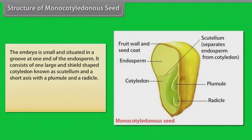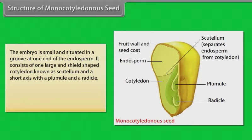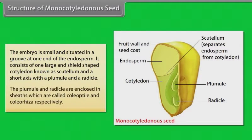The embryo is small and situated in a groove at one end of the endosperm. It consists of one large shield-shaped cotyledon known as scutellum, and a short axis with a plumule and a radicle. The plumule and radicle are enclosed in sheaths called coleoptile and coleorhiza respectively.